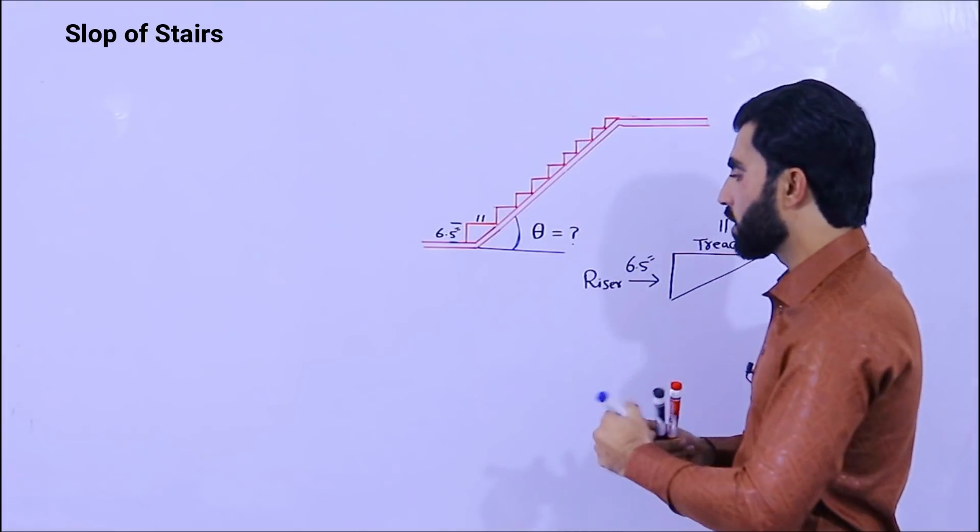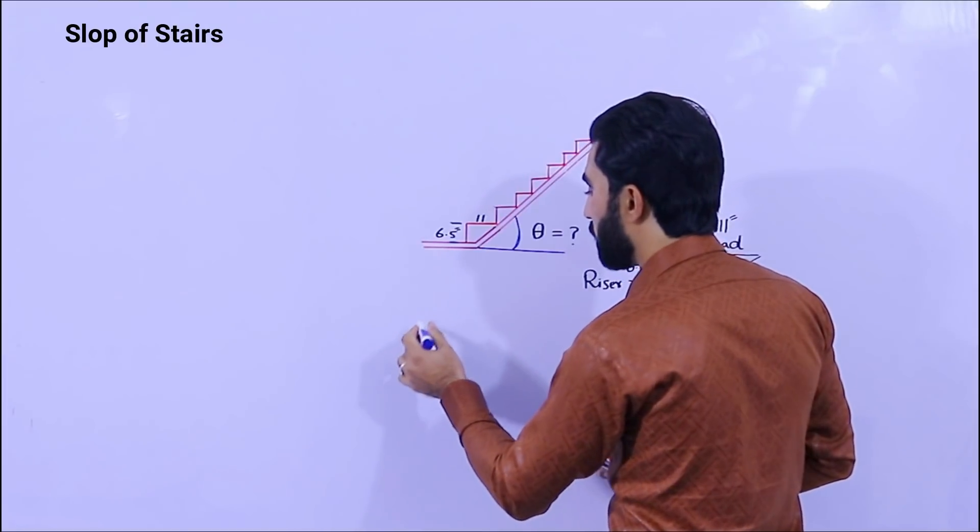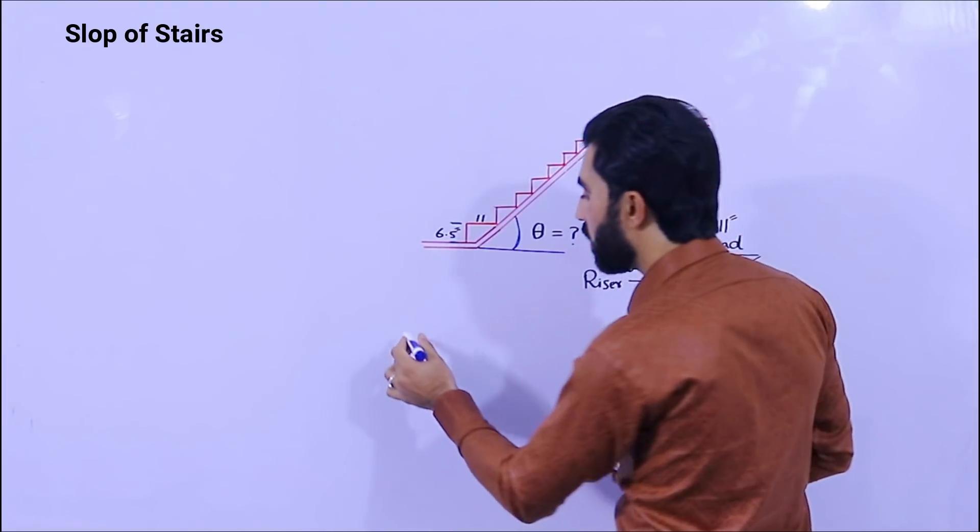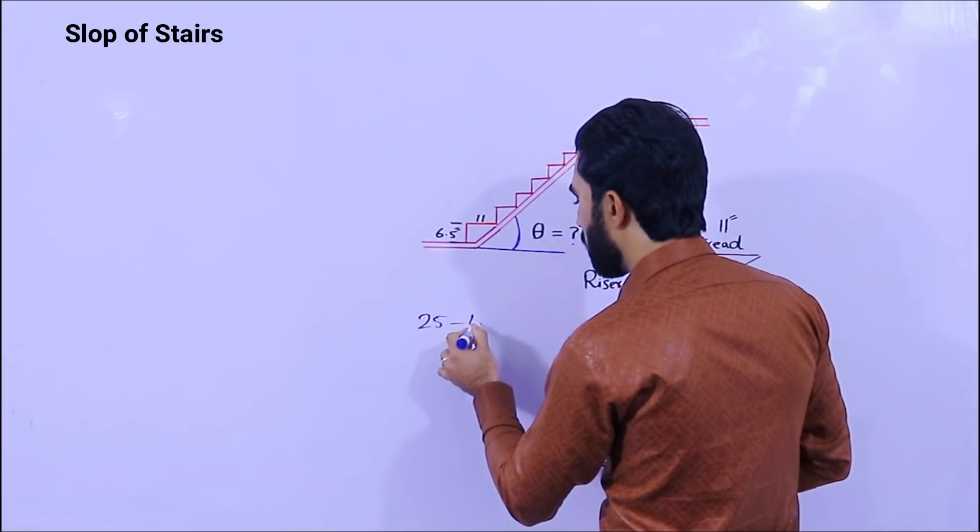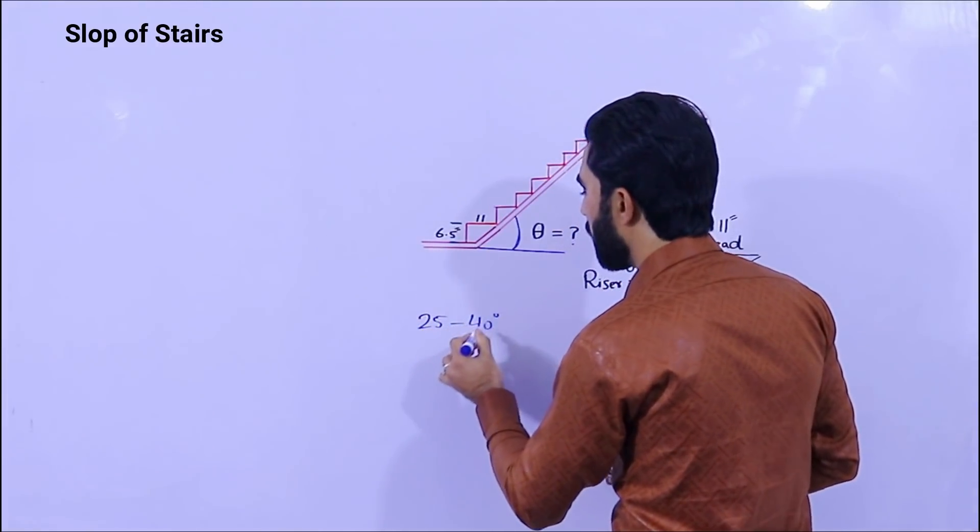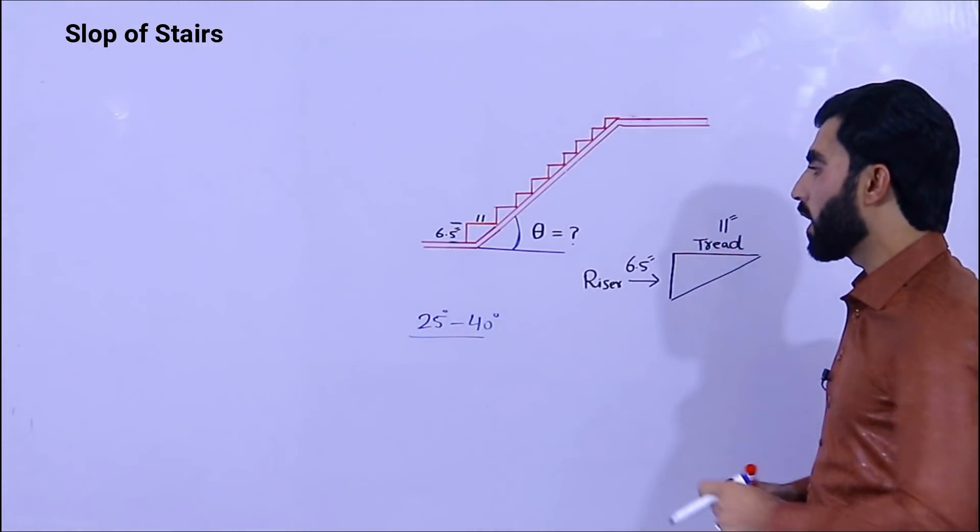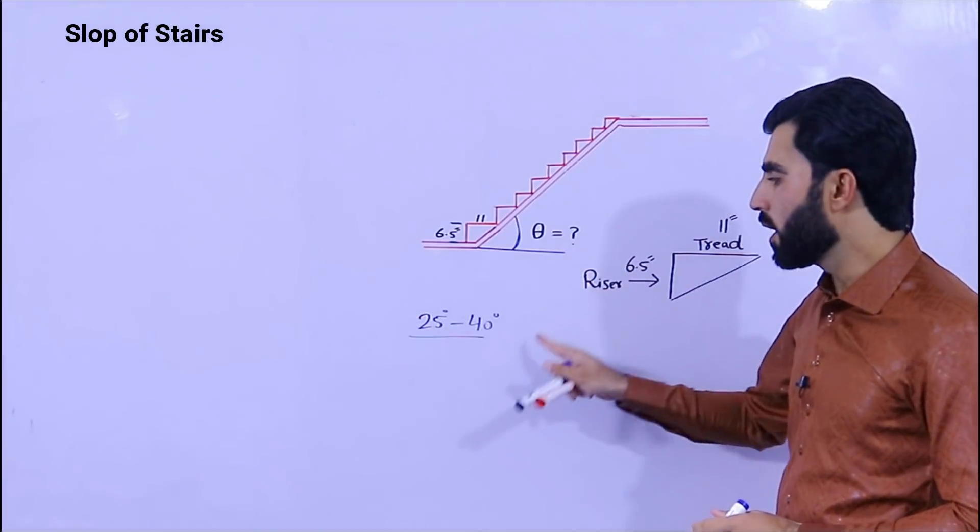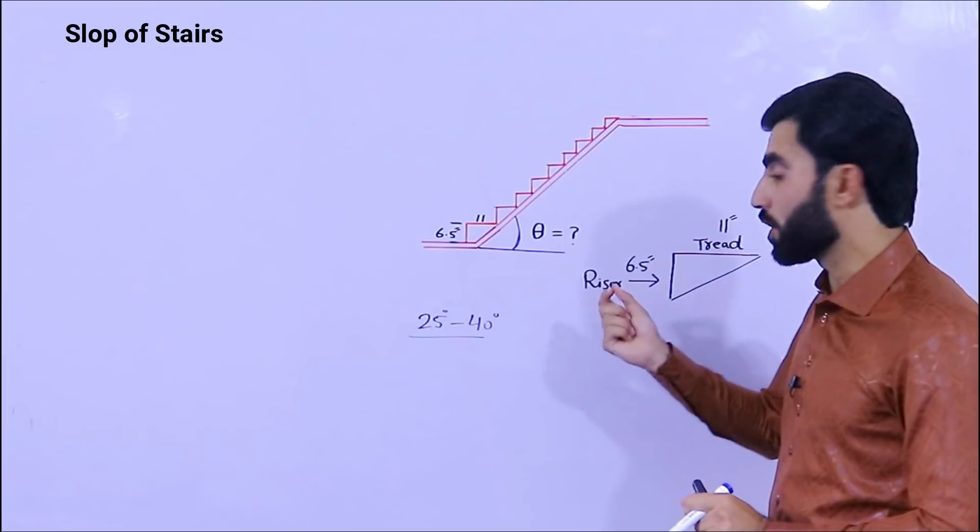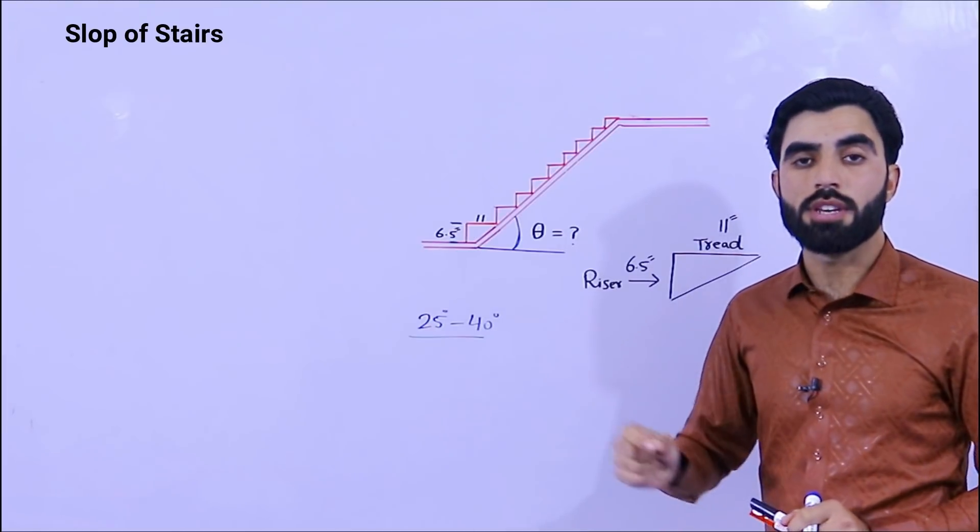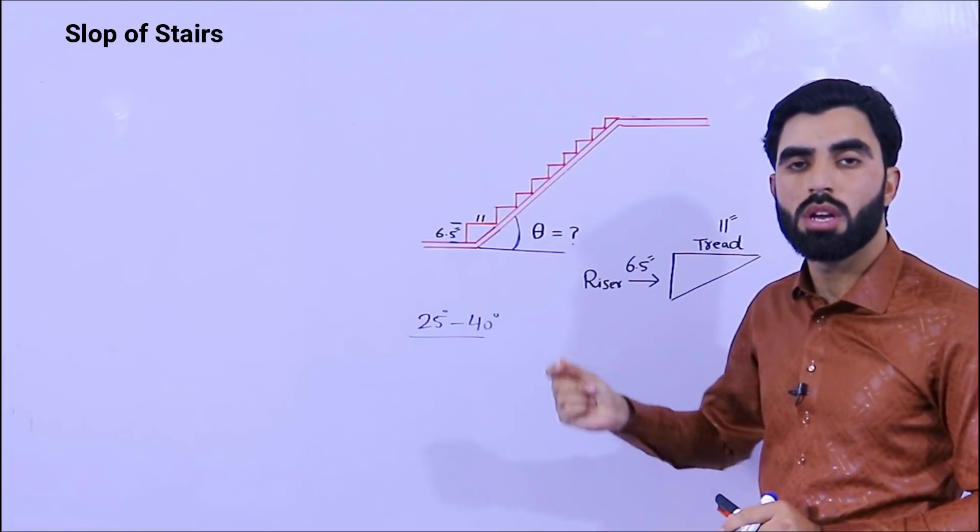What should be the angle of this stair? First of all guys, remember I will tell you the slope of staircase should not be more than or between 25 to 40 degrees. So between 25 to 40 degrees you're able to design the stairs. Less than 40 is very important, especially in the construction of stairs.